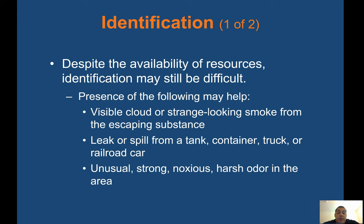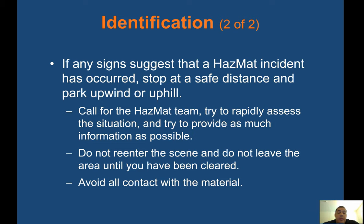Identification: despite the availability of resources, identification may still be difficult. Clues that may help include: a visible cloud or strange-looking smoke from an escaping substance, a leak or spill from a tank, container, truck, or railroad car, or an unusual, strong, noxious, harsh odor in the area. If any signs suggest a HAZMAT incident, stop at a safe distance, park upwind or uphill, call for the hazmat team, rapidly assess the situation, and provide as much information as possible. Do not re-enter the scene until cleared, and avoid all contact with the material.